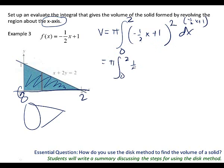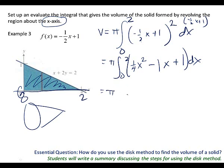We square that function and write dx. This one's a bit harder even though it's a line — I need to foil before integrating. What's negative one-half x times negative one-half x? One-fourth x squared. Negative one-half times one is negative one-half, and we have two of those, so just negative one — and one times one is one. Now we're ready to integrate.